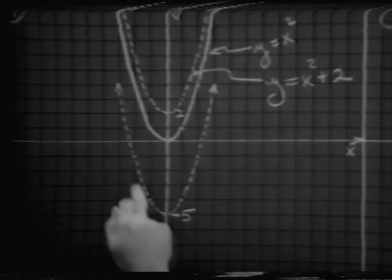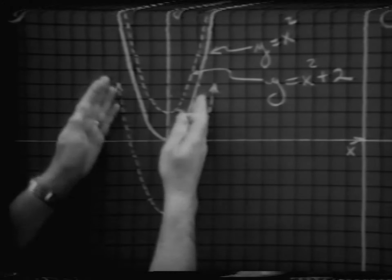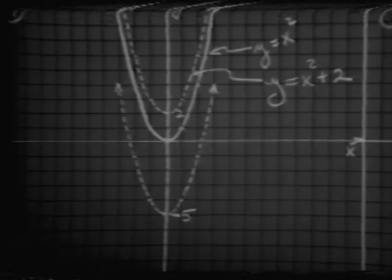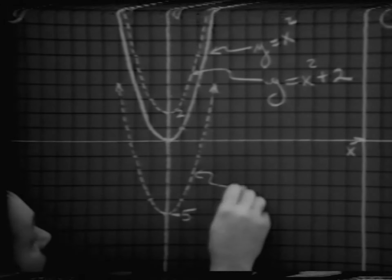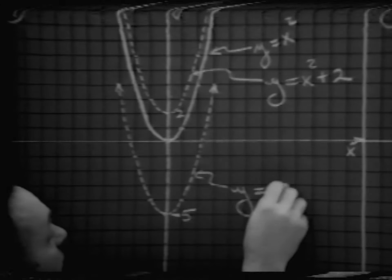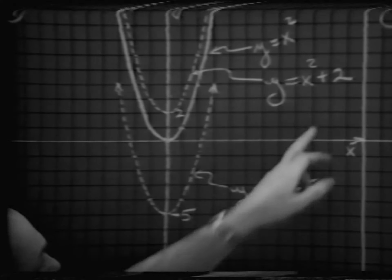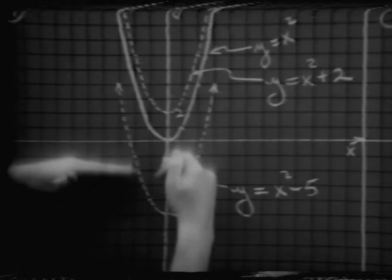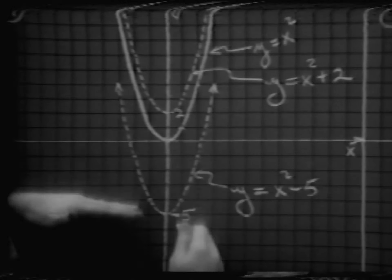Similarly, if we then were to take our y equals x squared curve and simply translate it downward 5 units, what then is going to be the equation of this graph? y equals x squared minus 5. So it looks like this constant that we are adding or subtracting in each case is going to have the effect of translating our graph in a vertical fashion — moving it up and down.